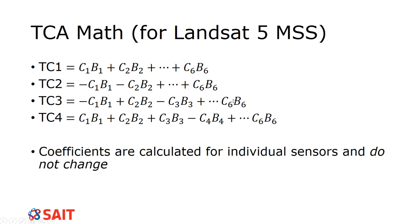I know that I have up to six here, but Landsat 5 did not have six — the coefficients are calculated for individual sensors and do not change. This is very different from the PCA, which changes for every single image you work with. For PCA you always need to redo the full calculation — finding eigenvectors, eigenvalues — and every image is different. For TCA, all these coefficients are already calculated for the actual sensor itself, except if you're not using Landsat, or if you're using Landsat 8, though even the Landsat 8 equations can be found.